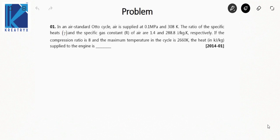Let's take the first question. In an air-standard Otto cycle, air is supplied at 0.1 MPa and 308 K. The ratio of specific heats gamma is 1.4, and the specific gas constant R is also given in J/kg·K — remember to take care of units. The compression ratio is 8, the maximum temperature in the cycle is 2660 K, which occurs after heat addition. We need to find the heat supplied in kJ/kg. Let's draw a rough PV diagram.